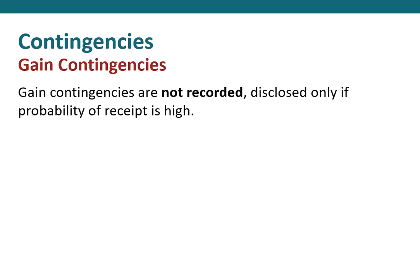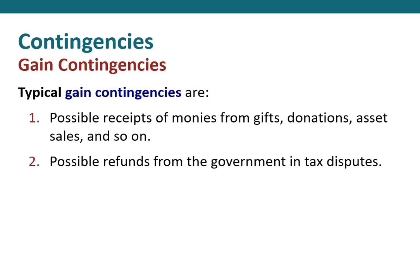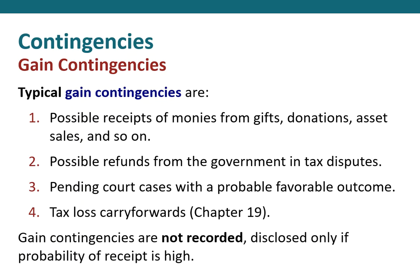Some possible gain contingencies include the possible receipt of money from gifts, donations, asset sales, and so on; possible refunds from the government in tax disputes; pending court cases with probable favorable future outcomes; or tax loss carry forwards, which we'll discuss in chapter 19. The important thing to remember: gain contingencies are not recorded. We only disclose them in the footnotes if the probability of receipt is high.